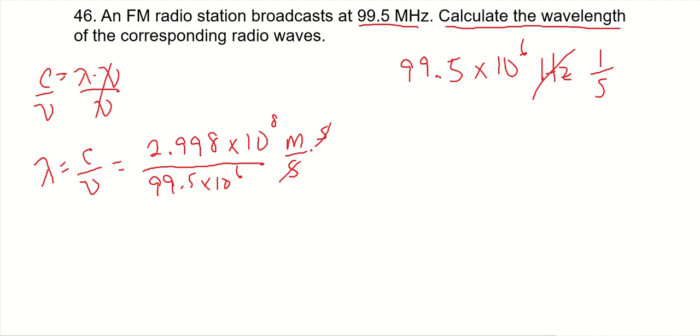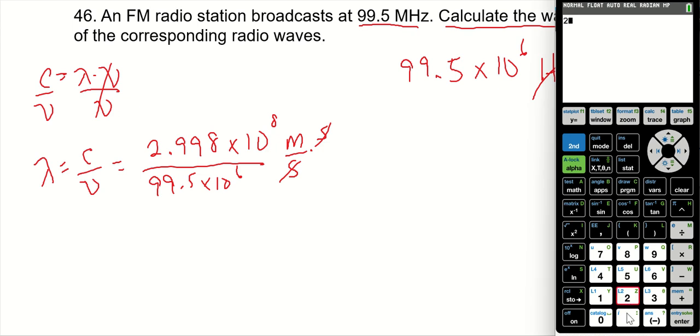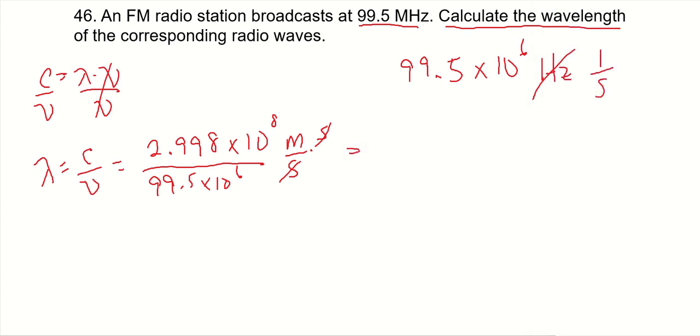Let's get our calculators out. 2.998 times 10 to the 8 divided by 99.5 times 10 to the 6. And you've got 3.01. We need three significant figures because the original measurement was in 3. 3.01 meters.